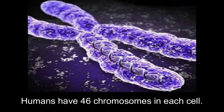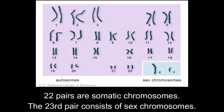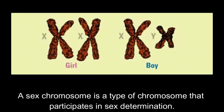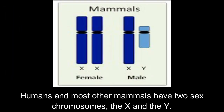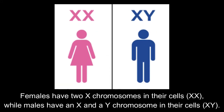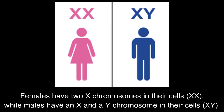Humans have 46 chromosomes in each cell. Observation of the human body cell shows 23 pairs of chromosomes for both males and females. 22 pairs are somatic chromosomes, and the 23rd pair consists of sex chromosomes. A sex chromosome is a type of chromosome that participates in sex determination. Humans and most other mammals have two sex chromosomes, the X and the Y. Females have two X chromosomes in their cells, while males have an X and a Y chromosome in their cells.